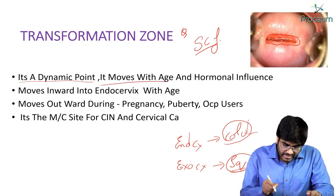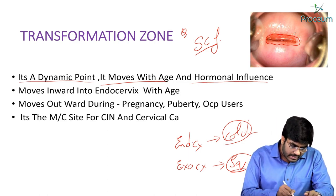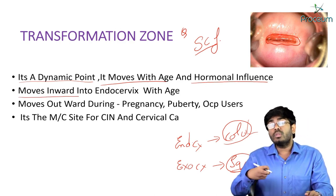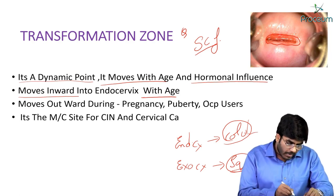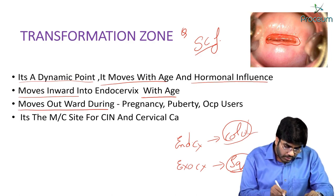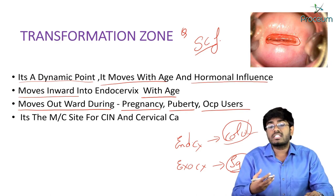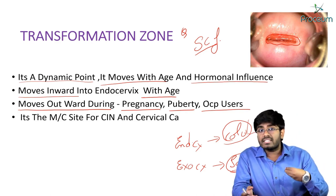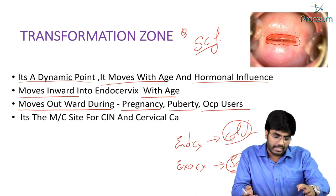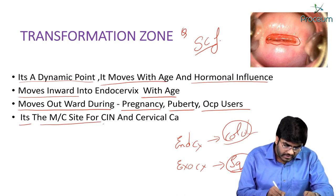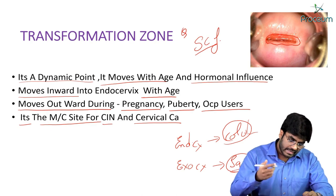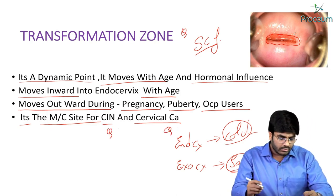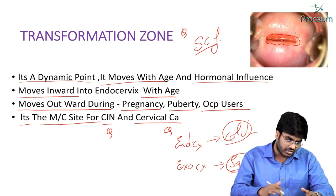The transformation zone moves with age and hormonal influences. It moves inward as the woman ages, but moves outward during pregnancy, puberty, and when using oral contraceptive pills. This transformation zone is the most common site for cervical intraepithelial neoplasia and cervical cancer — it is the site from which both CIN and cervical cancer arise.